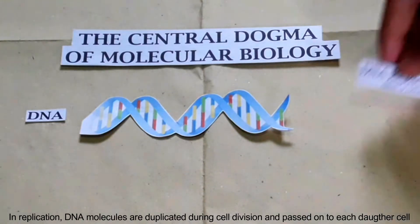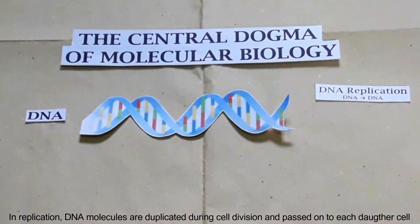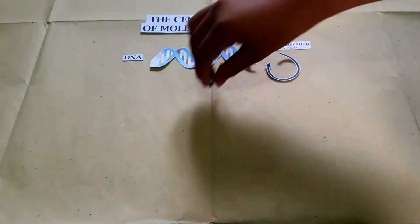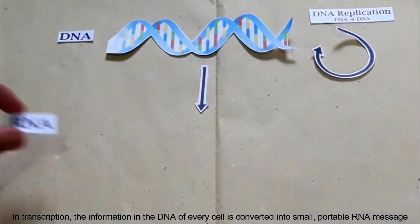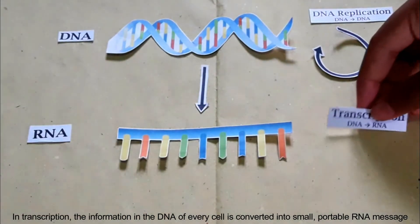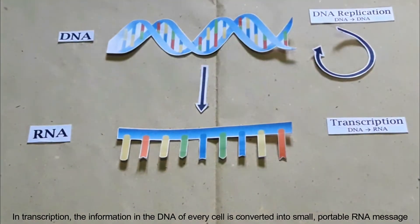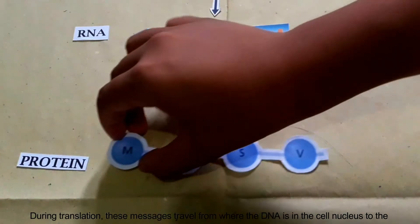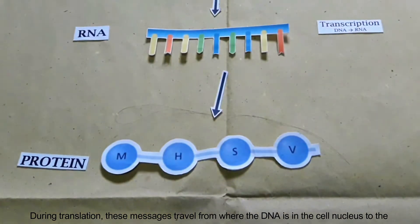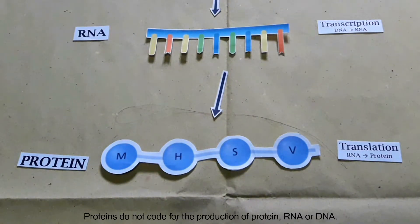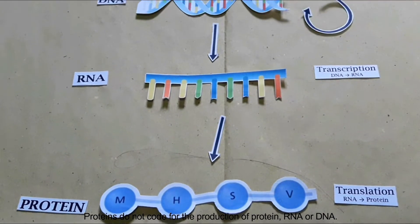In replication, DNA molecules are duplicated during cell division and passed on to each daughter cell. In transcription, the DNA of every cell is converted into small, portable RNA messages. During translation, these messages travel from the cell nucleus to the ribosomes, where they are read to make specific proteins. Proteins do not code for the production of protein, RNA, or DNA.